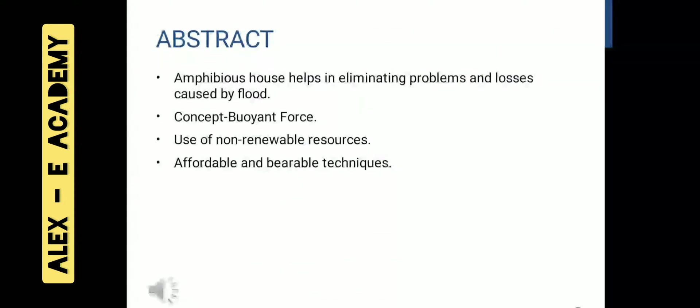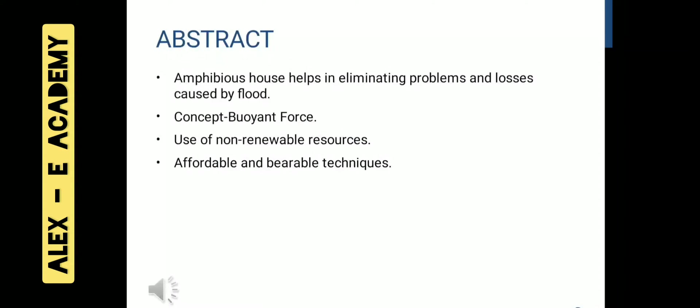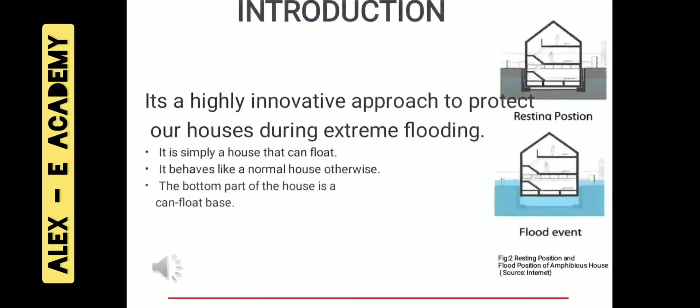Abstract. We all know that floods are acts of God but flood losses are largely acts of man. Amphibious House is a house which helps to encounter the problems of floods and losses caused due to floods to houses. The concept we use here is buoyant force. Use of non-renewable sources like solar with affordable and wearable techniques are also considered. Amphibious House is a highly innovative approach to protect our houses during extreme flooding. It behaves like a normal simple house and it will float during floods. The bottom part of the house has a float base which acts like the hull of a ship and it is made up of a waterproof material.